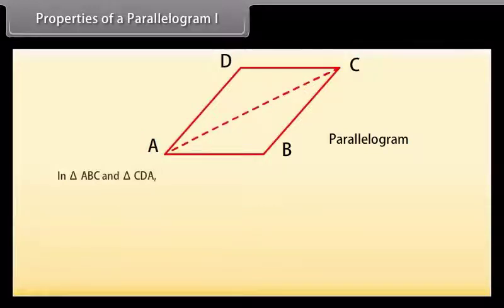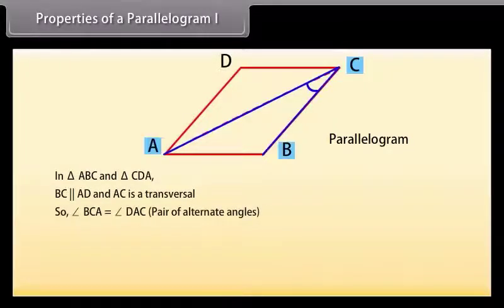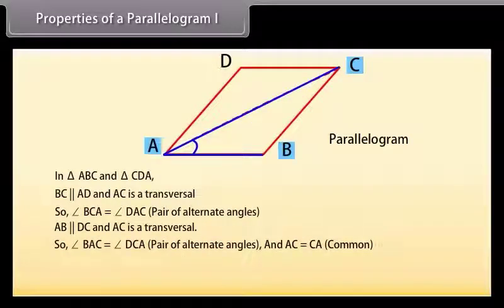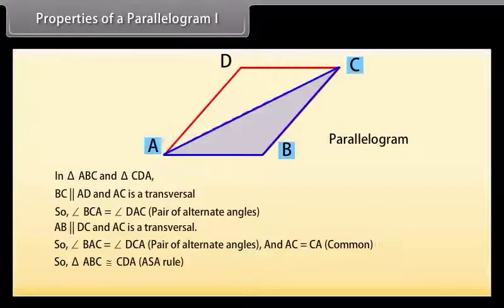In triangle ABC and triangle CDA: BC is parallel to AD and AC is a transversal, so angle BCA = angle DAC (alternate angles). Also, AB is parallel to DC and AC is a transversal, so angle BAC = angle DCA (alternate angles). And AC = CA, which is common to both triangles. Therefore, by ASA rule, triangle ABC is congruent to triangle CDA. So diagonal AC divides parallelogram ABCD into two congruent triangles.